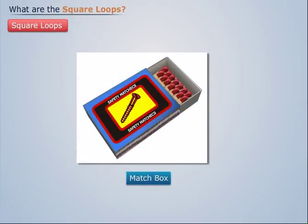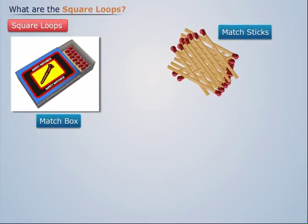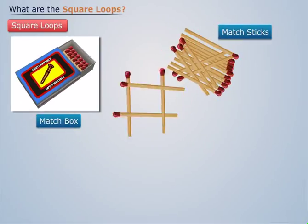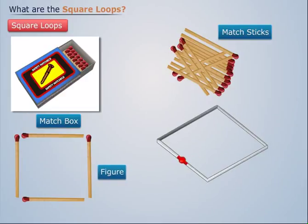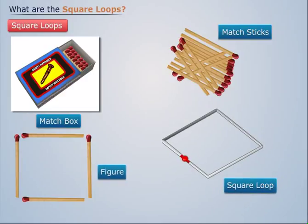Let us consider the matchbox that is used to light fire. If the matchsticks are taken and a square shaped structure is formed, then this kind of structure is basically a square loop.